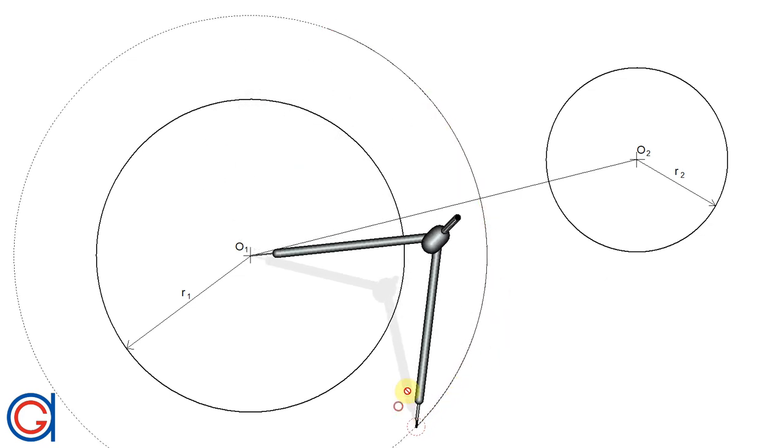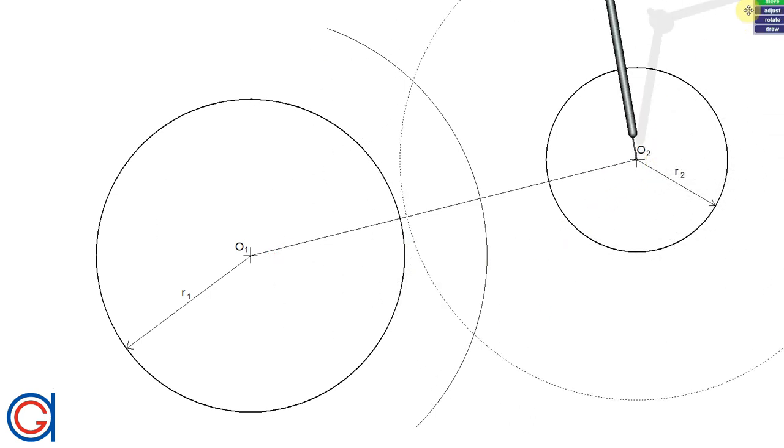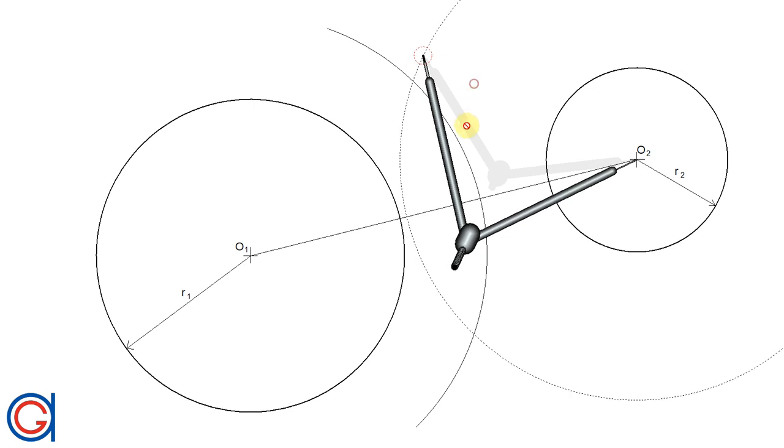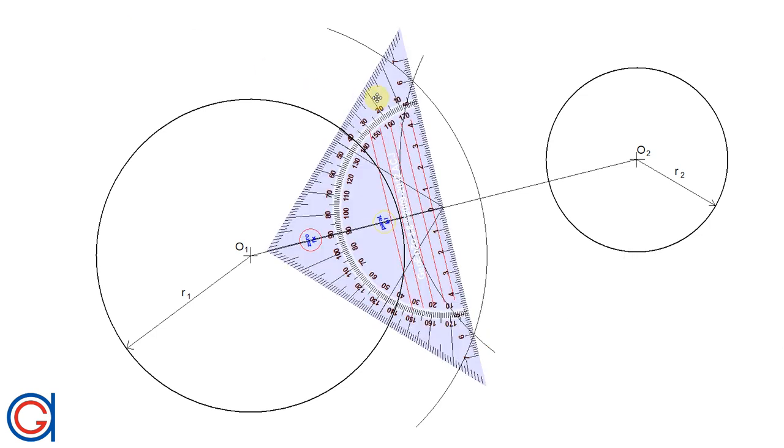To do this, we set the compass slightly longer than half the distance of O1 to O2 and draw an arc. Now setting our compass on O2 with the same radius, we'll draw another arc intersecting our previously drawn arc at two points. Now we join these two intersections.